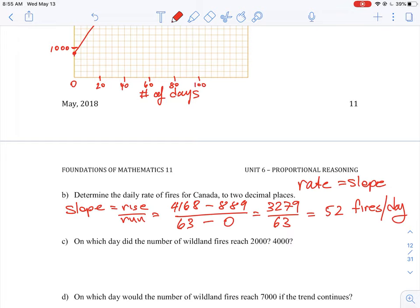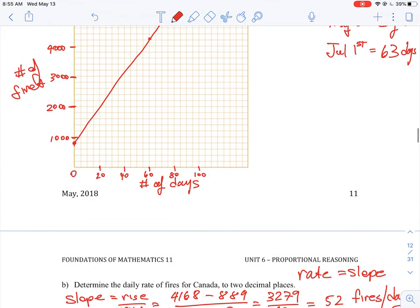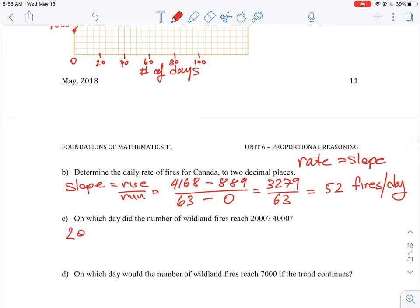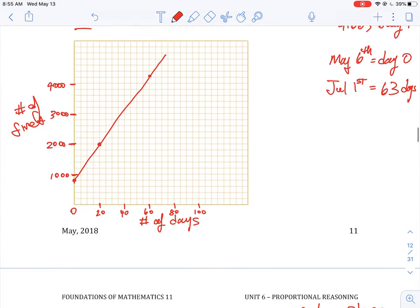And then which day did the number of wildfires equals 2,000 and 4,000? So we would just read that right off the graph. Because we have our two points, we can say that our 2,000 fire happened around day 20. So 2,000 fires on about day 20.